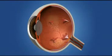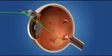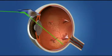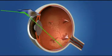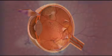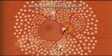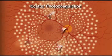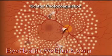With laser surgery for PDR, the laser is applied to the peripheral retina, avoiding the central macula. This laser treatment, called PRP, or panretinal photocoagulation, also known as scatter photocoagulation, causes the blood vessels to shrink and often prevents them from growing again in the future. It also decreases the chances of the blood vessels bleeding into the vitreous or causing a retinal detachment.